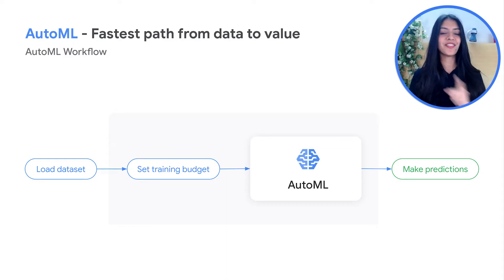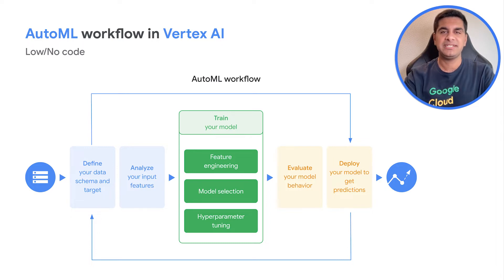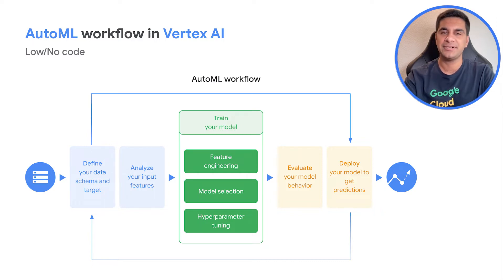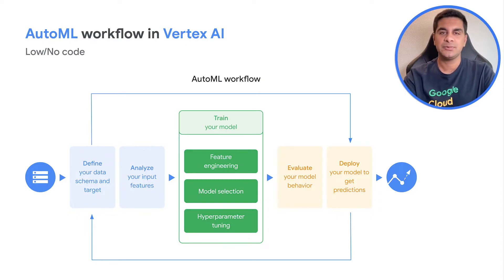AutoML provides a graphical, codeless interface guiding users through the end-to-end ML lifecycle with significant automation and guardrails at each step. It helps you easily define your data schema and target, analyze input features in the feature statistics dashboard, and automatically train your model — including automated feature engineering, model selection, and hyperparameter tuning. It then allows you to evaluate model behavior before deploying to production, and deploy your model in one click. What used to take months can now take weeks or even days.